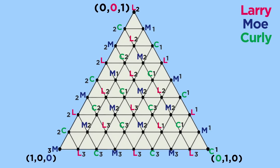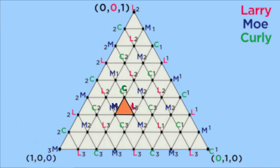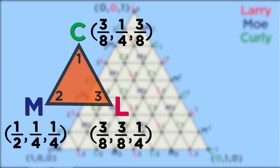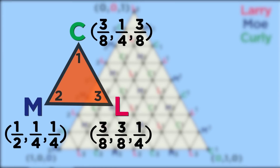So, at least one of the smaller triangles must be fully labeled. The fully labeled triangle gives a fair division of the rooms. Curly gets room 1, Mo gets room 2, and Larry gets room 3, at roughly the prices with which they selected those rooms.